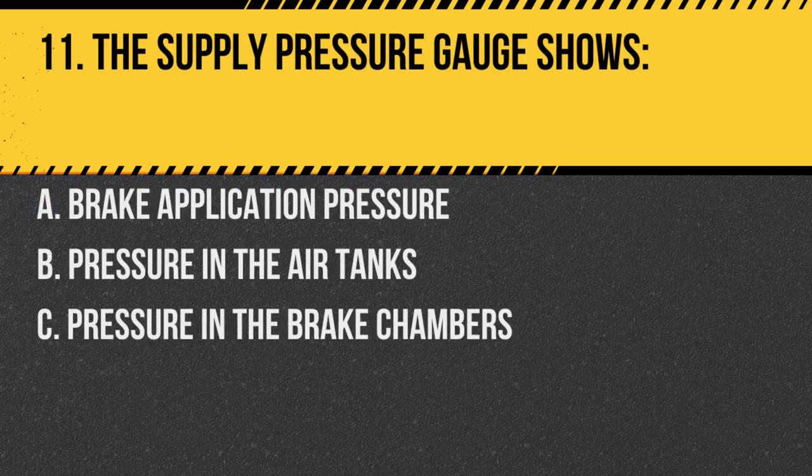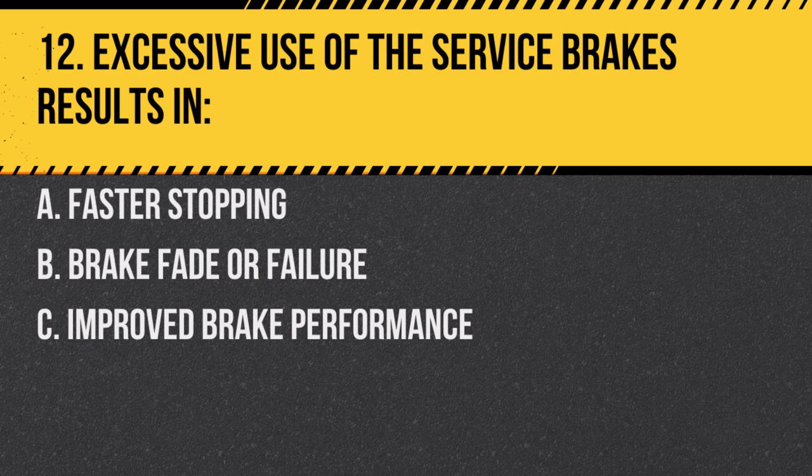Question 11. The supply pressure gauge shows: A. Brake application pressure. B. Pressure in the air tanks. C. Pressure in the brake chambers. Answer B. Pressure in the air tanks. It indicates the amount of air available.